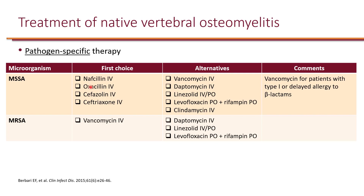If the patient cannot tolerate the first choice, alternative recommendations are vancomycin, daptomycin, linezolid, levofloxacin plus rifampin, and clindamycin. These are alternatives because the first choices are more effective as well as safer. Levofloxacin and rifampin is a two-drug combination because that is how this combination was studied in clinical trials. For MSSA specifically, beta-lactams are superior to vancomycin, so it's always important to not use vancomycin for MSSA unless the patient has a severe type 1 beta-lactam allergy.